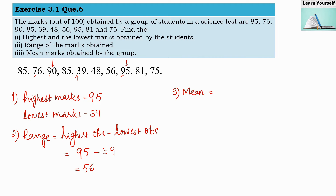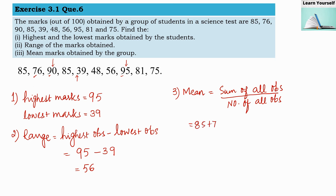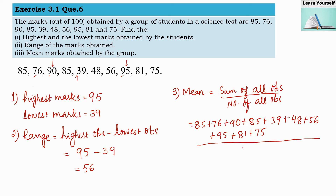Third, mean marks obtained by the group. Mean equals sum of all observations divided by number of observations. Adding all values: 85 plus 76 plus 90 plus 85 plus 39 plus 48 plus 56 plus 95 plus 81 plus 75 divided by 10 observations. The sum of all observations is 730 divided by 10, so the mean is 73.